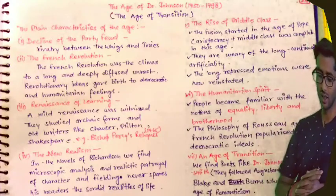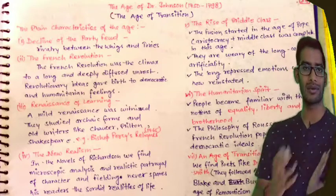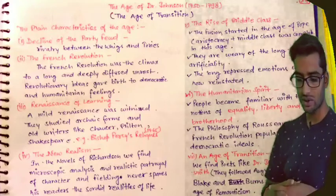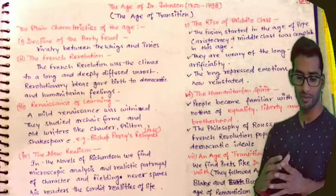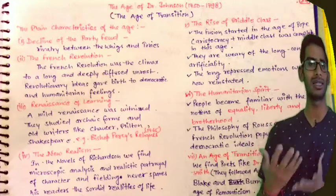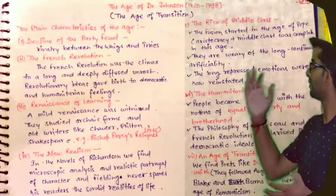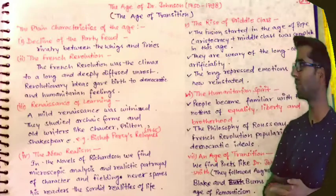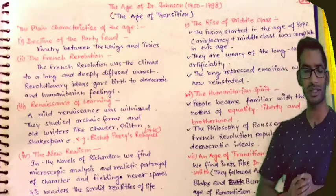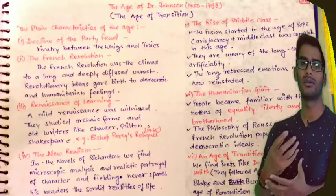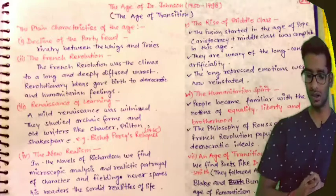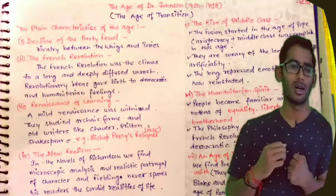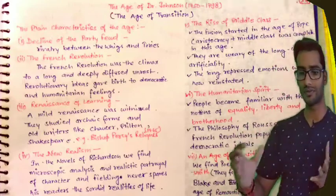Next is the Rise of the Middle Class. The fusion started in the Age of Pope, so aristocracy and the middle class were both influential. They were weary of the long-continued artificialities — tired of this artificiality — and were now trying to bring some new things to society. The long-repressed emotions were now reinstated, as their emotions had been repressed by kings and through the reign.